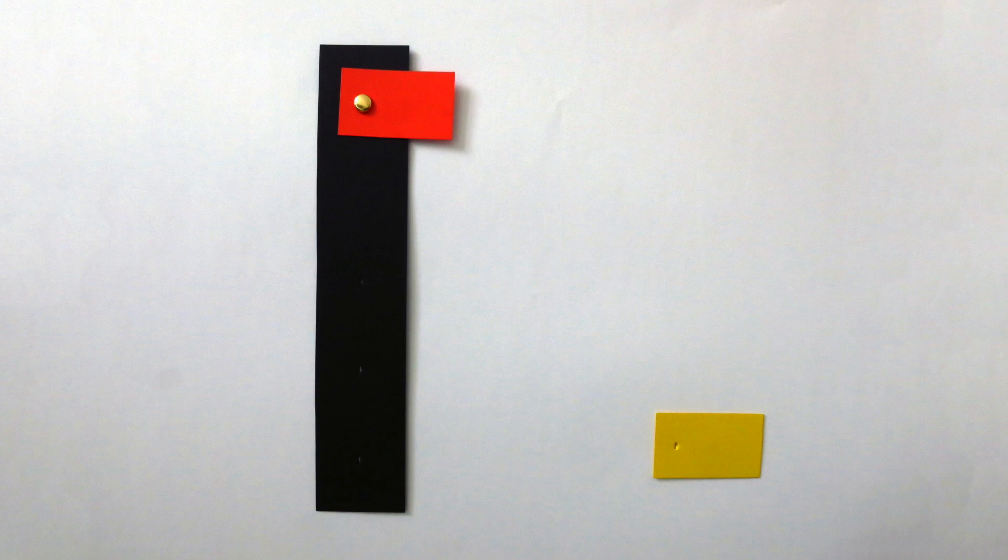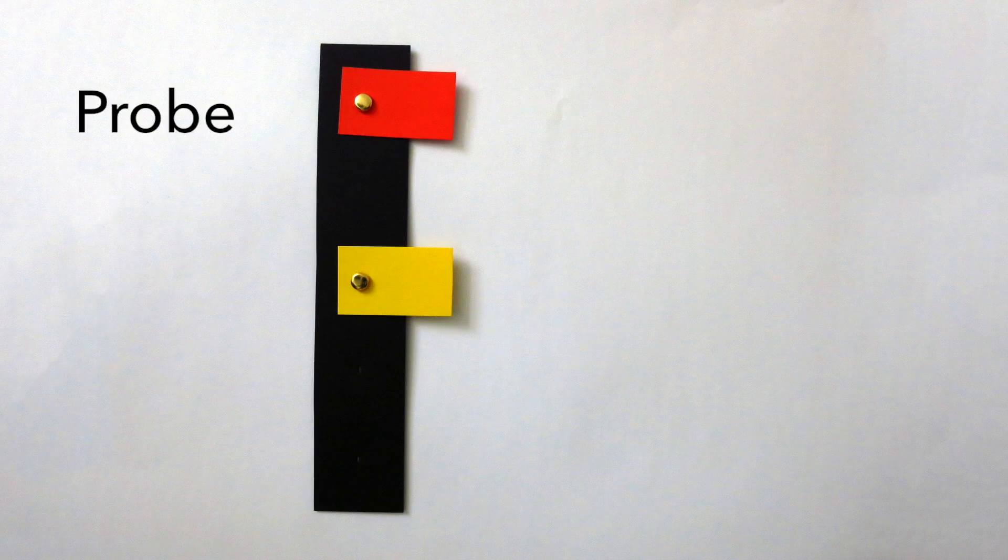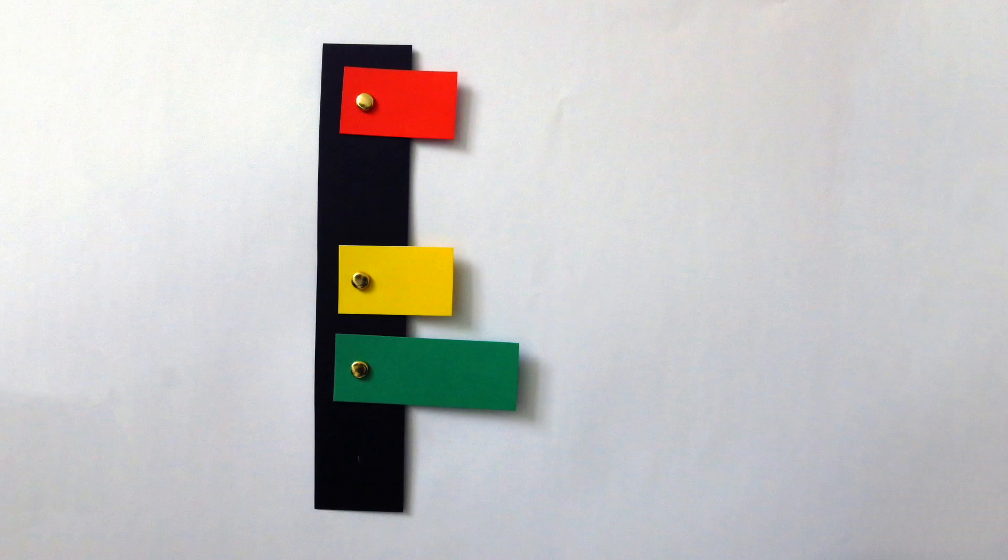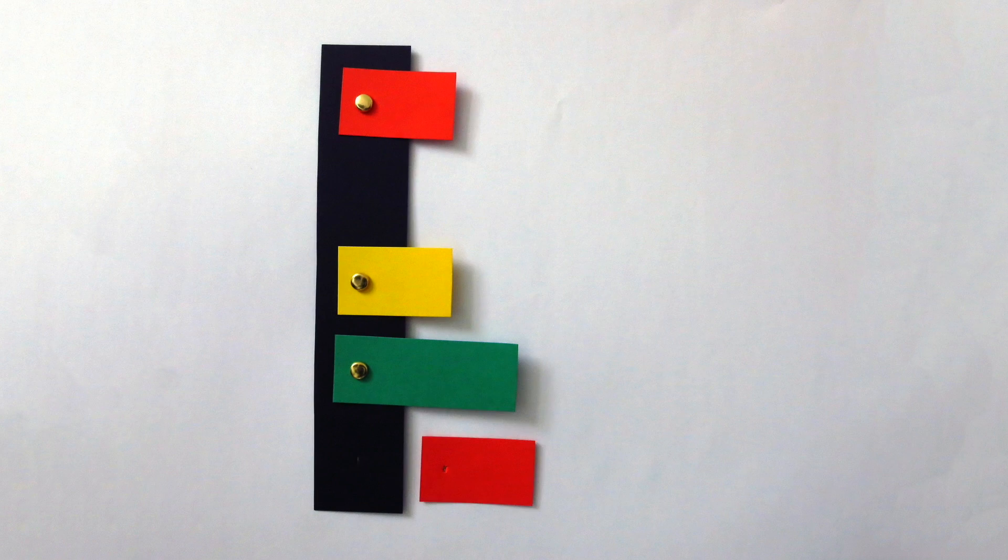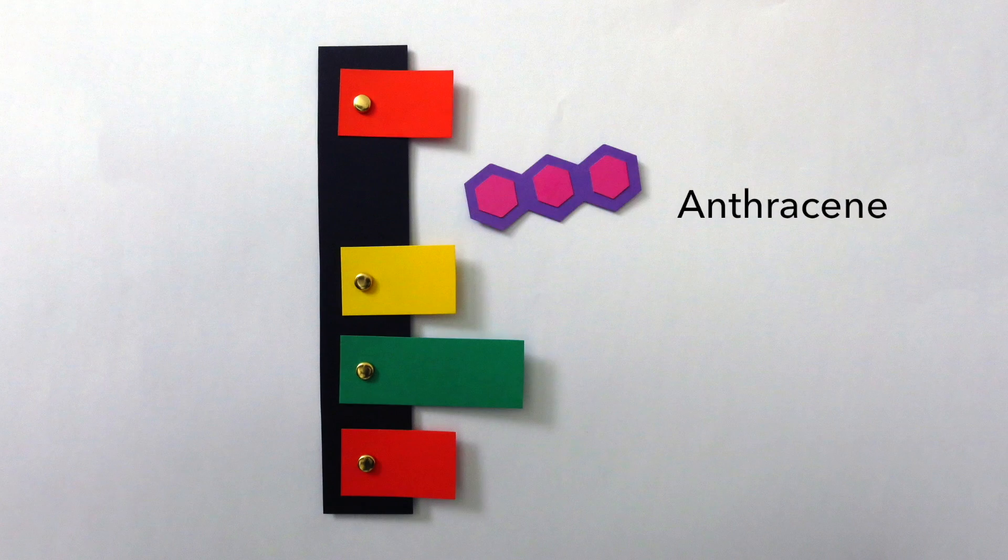To work out which SNP a section of DNA contains, we artificially manufacture a probe. This is a short strand of DNA designed to match with one form of a SNP. It has a fluorescent molecule, called anthracene, in the place of one of the bases.